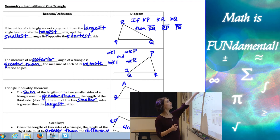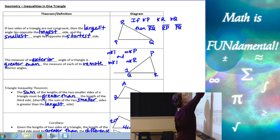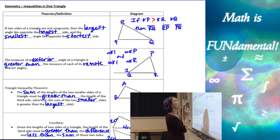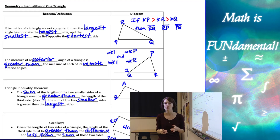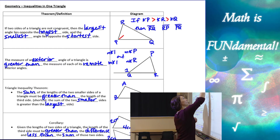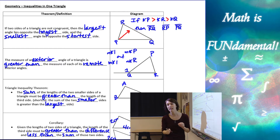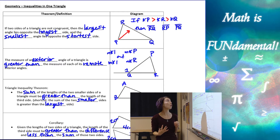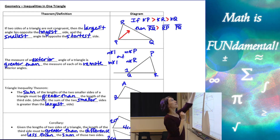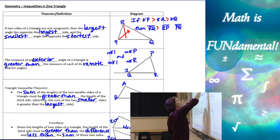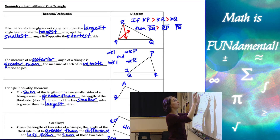For example, let's look at this diagram. Angle P is the largest angle, so if angle P is greater than angle R — the second largest — which is greater than angle Q — the smallest angle — then the side across from angle P, across from the largest angle, is going to be the largest side. So RQ would have to be greater than the side across from angle R, which is PQ.